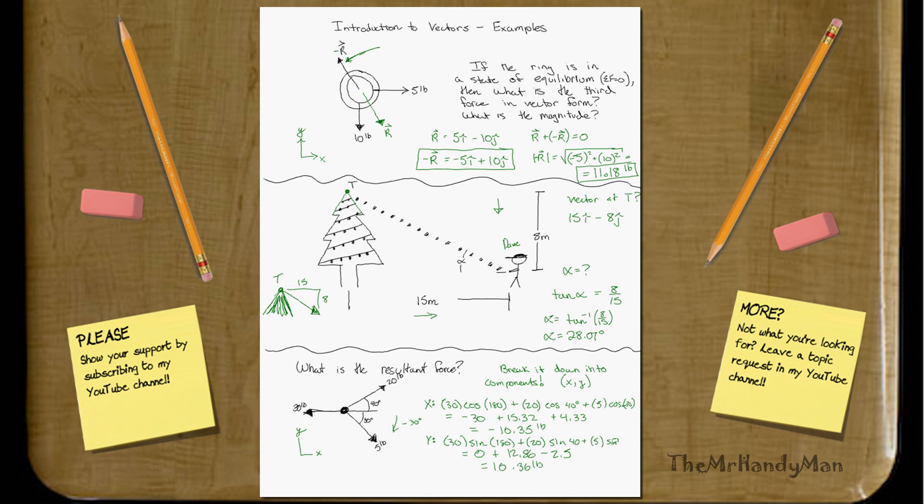So, essentially, your resultant force will equal negative 10.35i, plus 10.36j. Pretty simple. But, you just have to make sure you don't make any small errors, or just lazy errors, I'll call them.